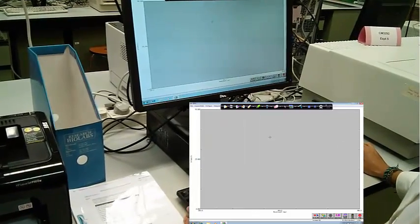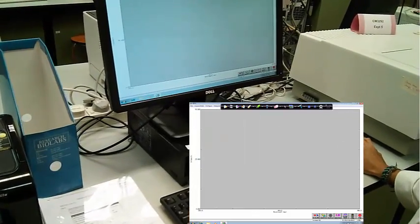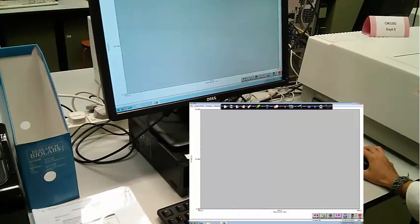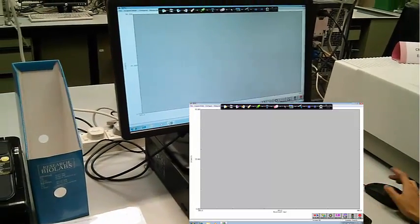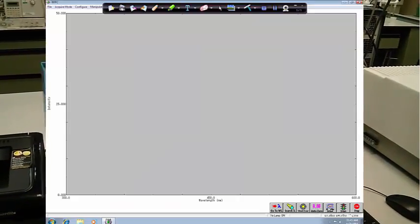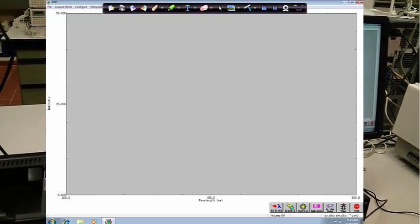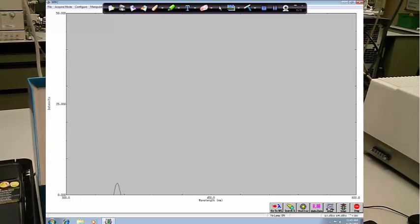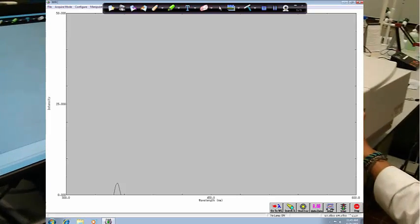Once we've set all our parameters, all we need to do is click the traffic light sign start, and our machine will start scanning. You'll hear the click. Yeah, just remember not to open the box when scanning.